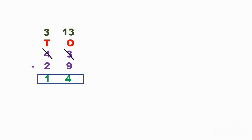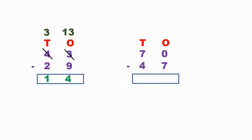Now let us see this example: seventy minus forty-seven. Zero minus seven — some children may get confused here and write seven, but that is wrong. I don't have anything, so how can I give seven? Zero minus seven means I cannot subtract because the top number is smaller and the bottom number is bigger.